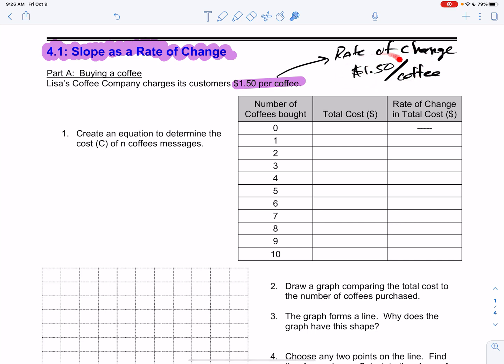Slash here means per, $1.50 per cup of coffee. You would consider this to be a rate of change, all right?